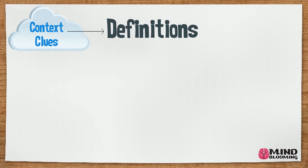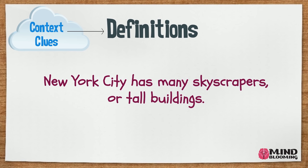Now let's see how we can find clues in a sentence that shows us a definition. New York City has many skyscrapers or tall buildings. If I don't know what skyscrapers mean, I can use the next part of the sentence as a clue. The word 'or' tells me that skyscrapers and tall buildings are very similar in meaning. That means skyscrapers means tall buildings.